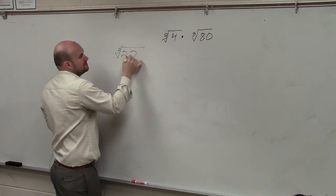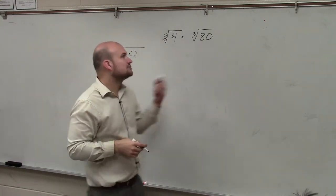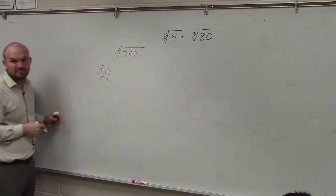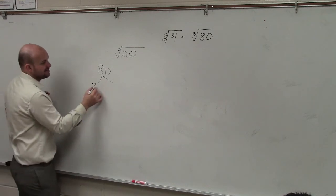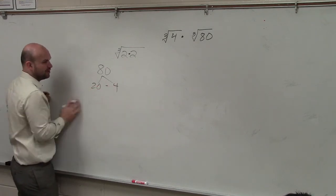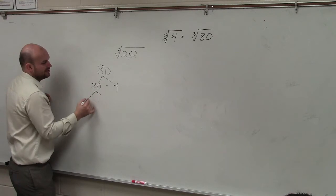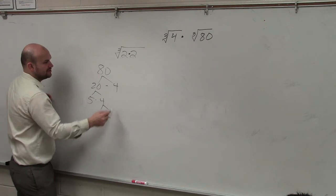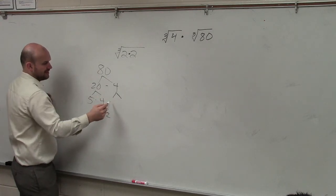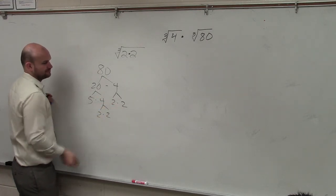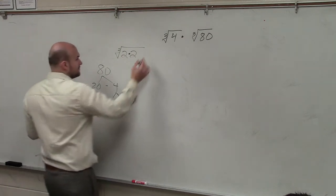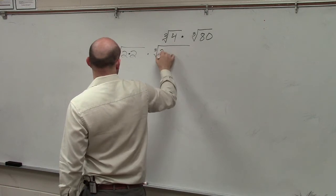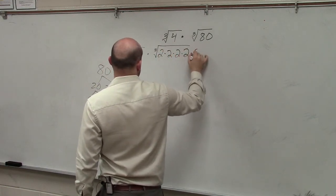4 can be written as 2 times 2. Everybody agrees with that, right? 80, though, is a little bit difficult because I'm going to have to use a factor tree since this is kind of big. So I can say this is 20 times 4. I could do this as 5 times 4, this as 2 times 2, and this as 2 times 2. So times, I have the cube root of 2 times 2 times 2 times 2 times 5.